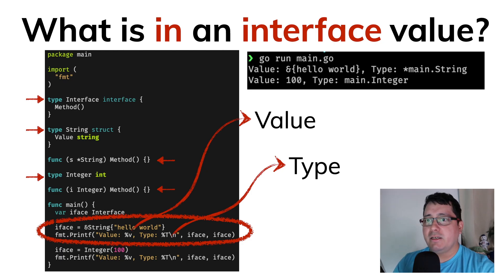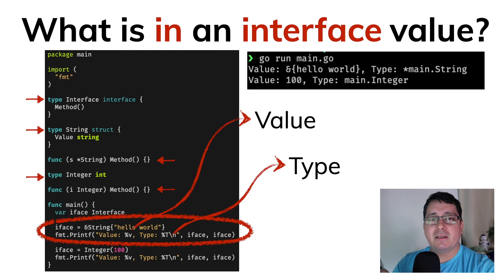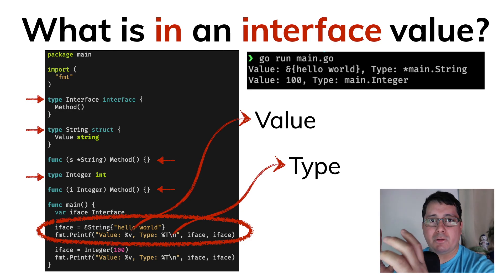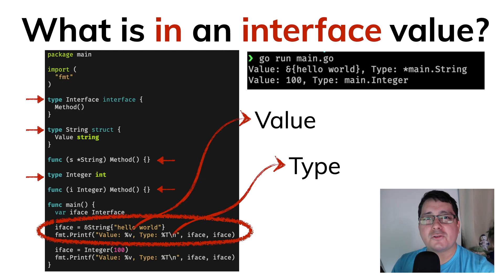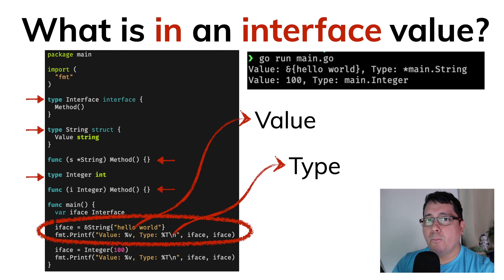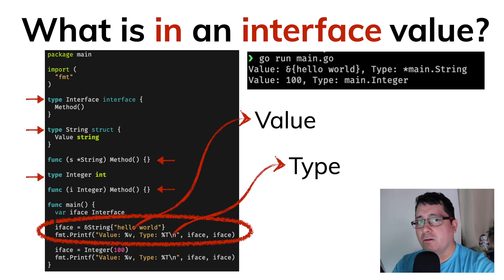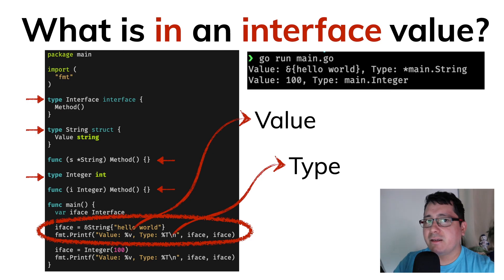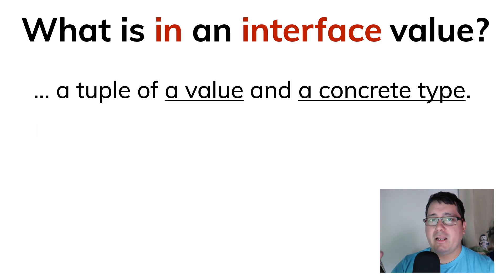This is important to remember because when we're discussing assigning values to interface variables, depending on how we define those variables, things will be assigned differently and perhaps we cannot assign those values back. It's important to notice that because interface values have these two components, when comparing values to nil, both of these things have to be nil for the variable to be considered nil.